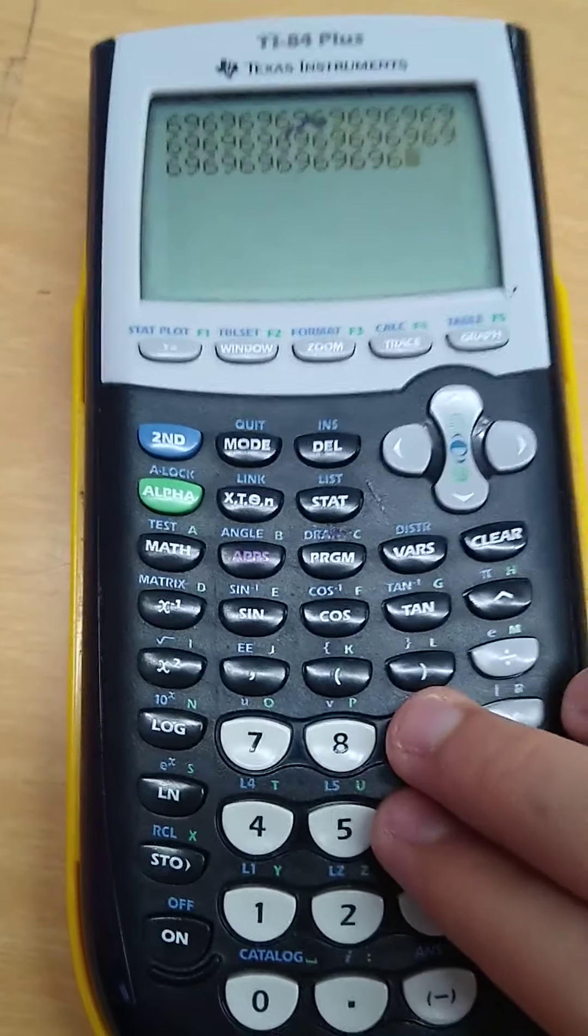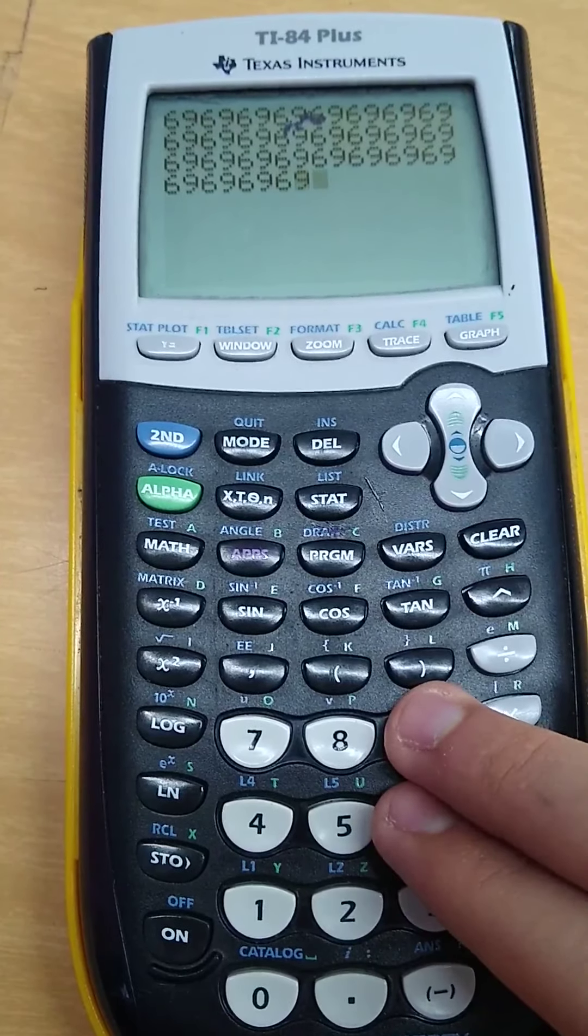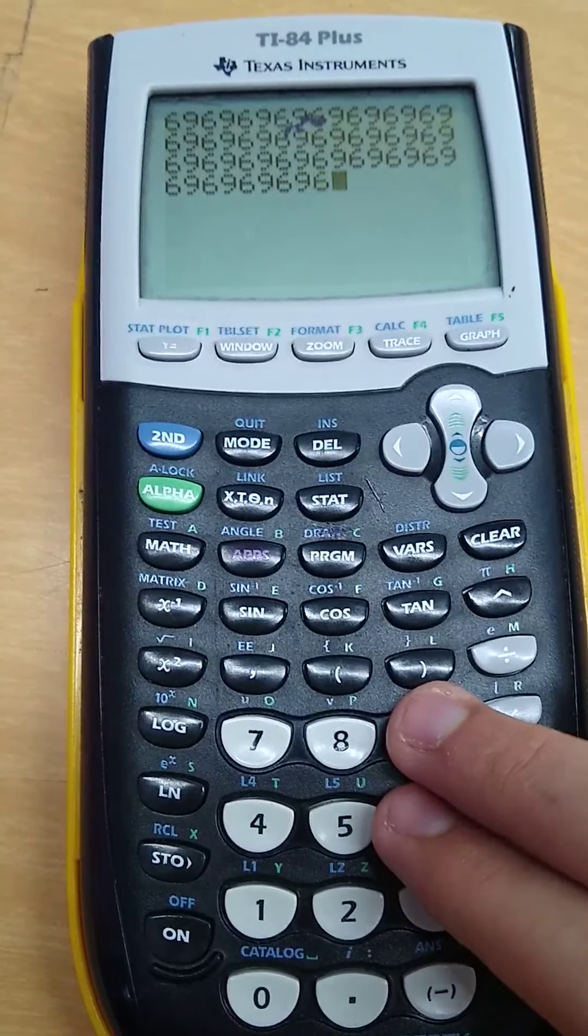Sixteen, seventeen, eighteen, nineteen, twenty, twenty-one, twenty-two, twenty-three, twenty-four, twenty-five, twenty-six, twenty-seven, twenty-eight, twenty-nine, thirty, thirty-one.